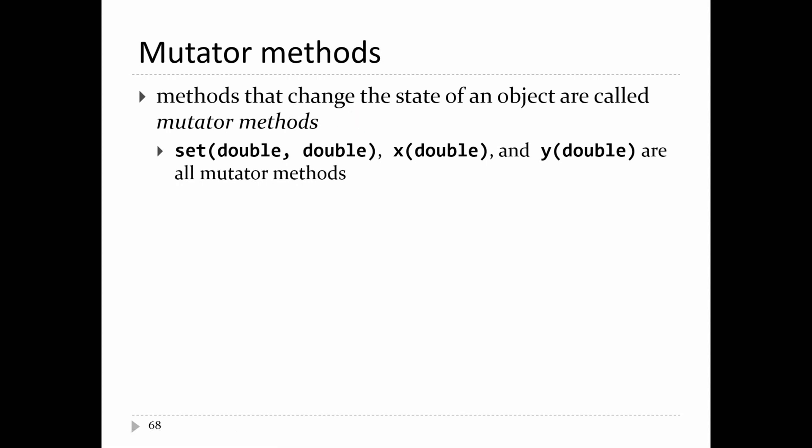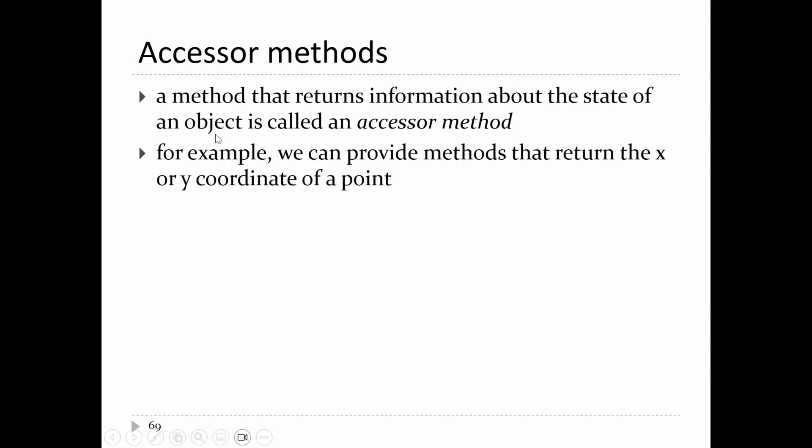Methods that change the state of an object are called mutator methods. And methods that don't change the state of the object, but instead return information about the state of the object, those are called accessor methods.